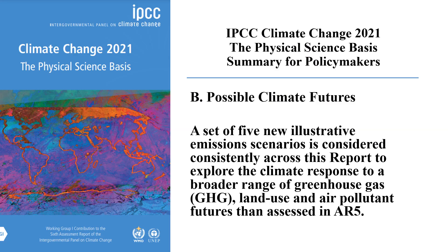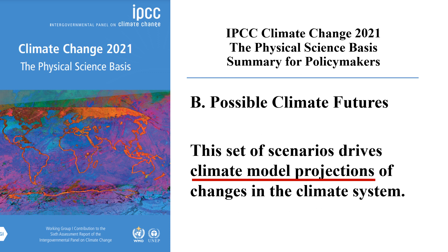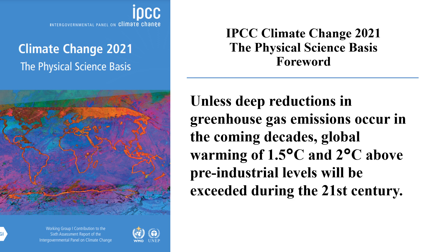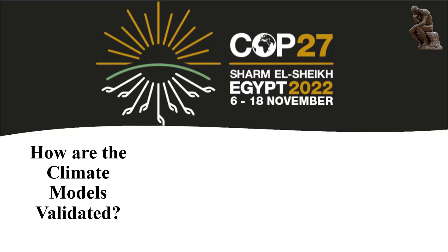For example, to predict possible climate futures for the IPCC 2021 report — the physical science basis — five scenarios were prepared based on a range of greenhouse gas concentrations and other factors. This set of scenarios were input to the climate models, which then projected future changes to the climate system. Based on these projections, the IPCC issued the warning that unless deep reductions in greenhouse gas emissions occur in the coming decades, global warming of 1.5 degrees Celsius and 2 degrees Celsius above pre-industrial levels will be exceeded during the 21st century.